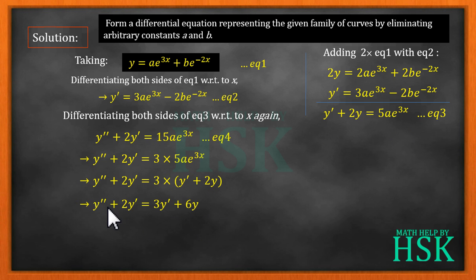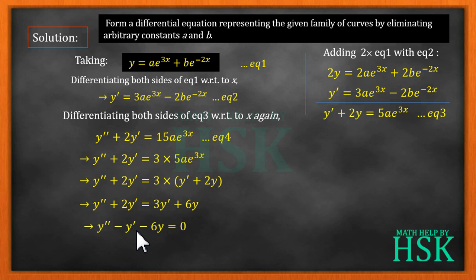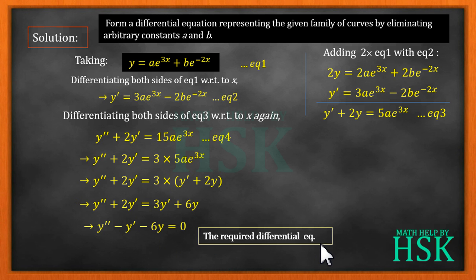Expanding: y'' + 2y' = 3y' + 6y. Bringing all terms to one side: y'' + 2y' - 3y' - 6y = 0, which simplifies to y'' - y' - 6y = 0. This is the required differential equation.